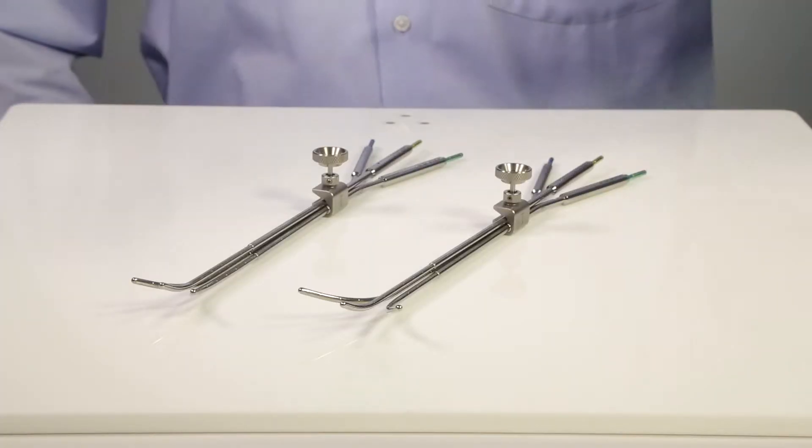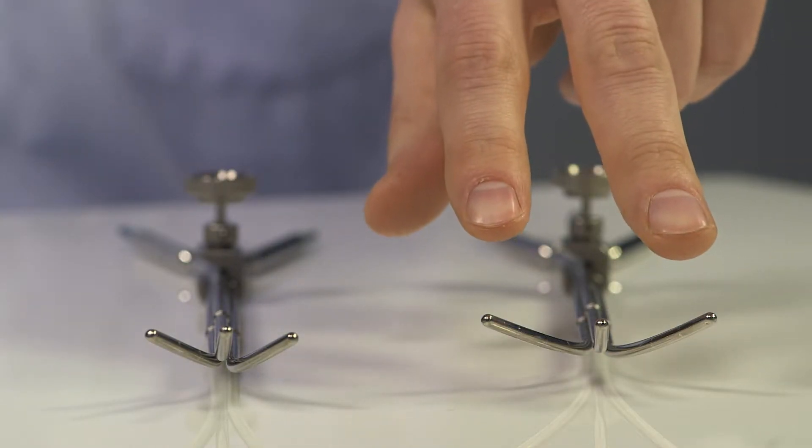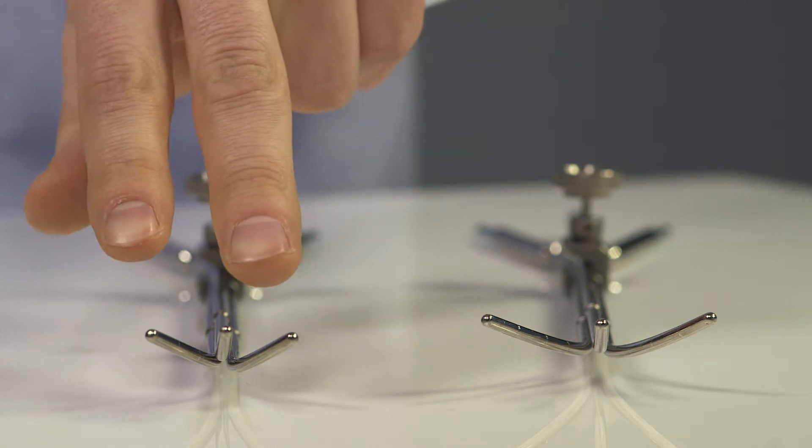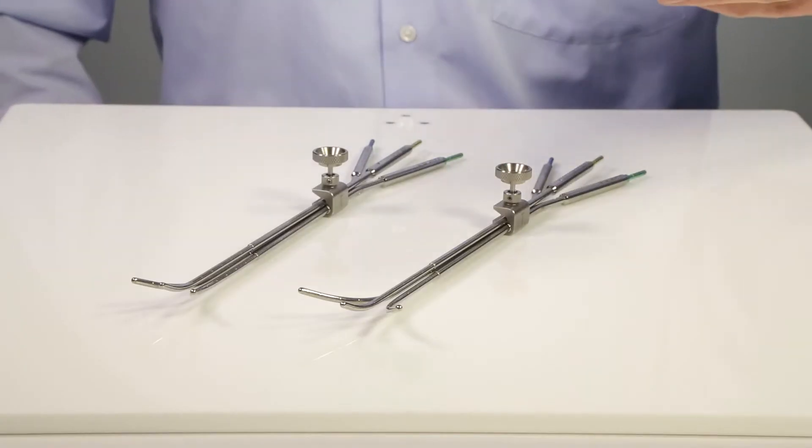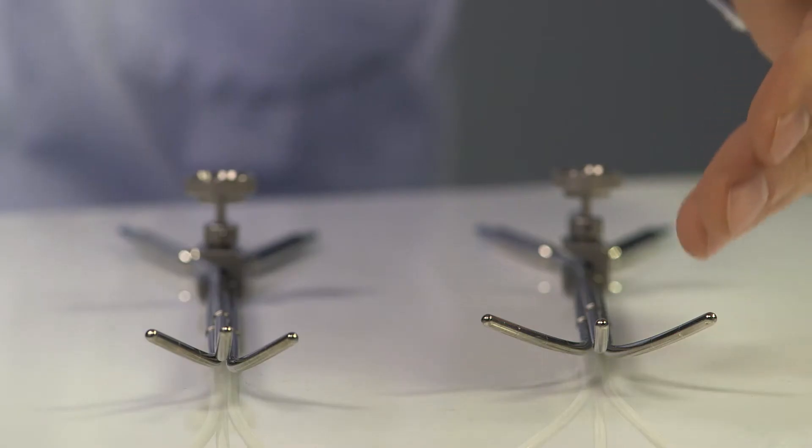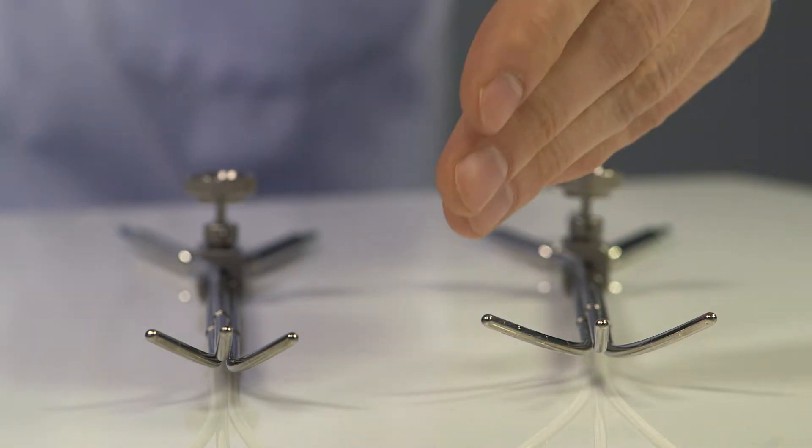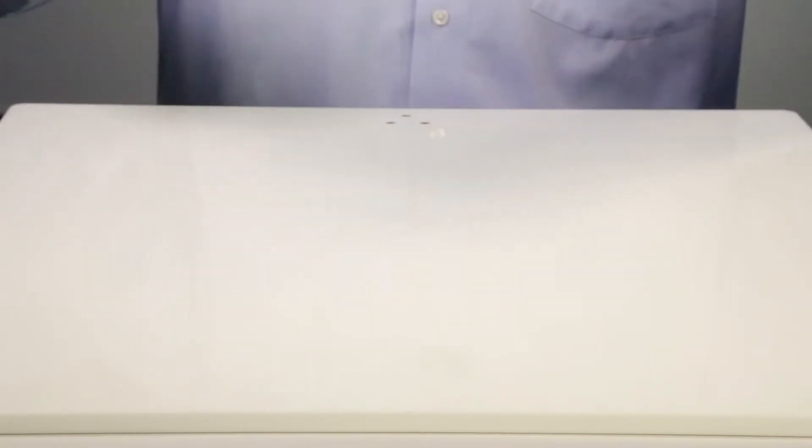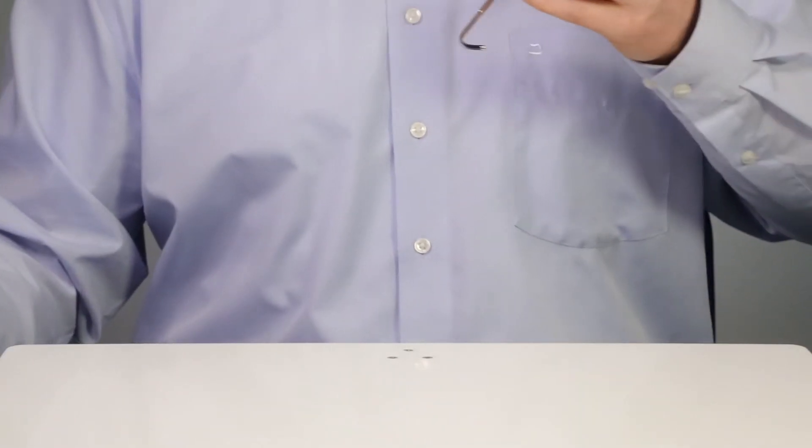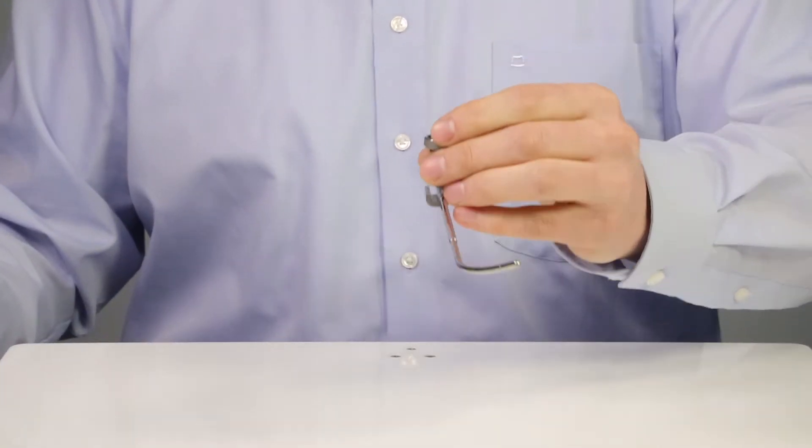The set consists of two variants, one with a five centimeter spread and one with a three centimeter spread. Each applicator has three tubes: the right, the central, and the left tube. For demonstration purposes, I will do the insertion without the patient model.